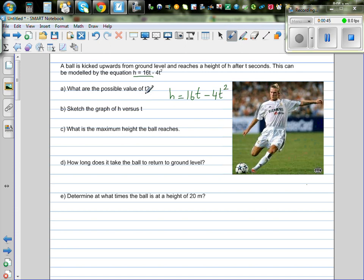What are the possible values of t? Now t is the time in seconds and h is the height. So let us make a table, a column of tables. So let us write t for time in seconds and h is height. So h equals 16t minus 4t squared.